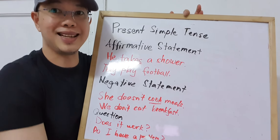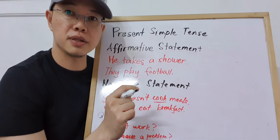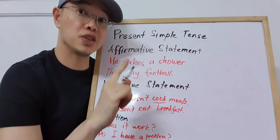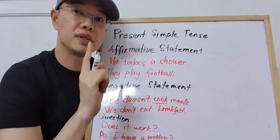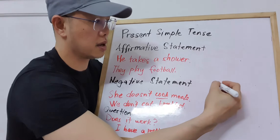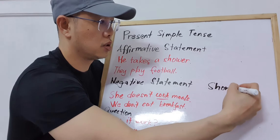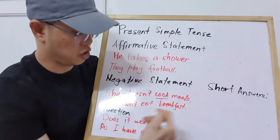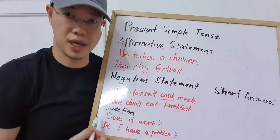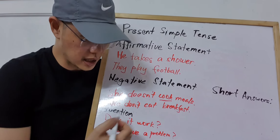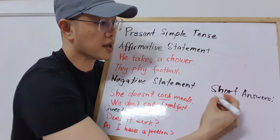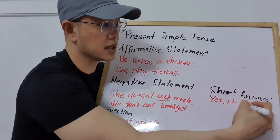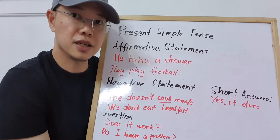Now, how do you make short answers? I also have a separate lesson for the rules on making short answers properly. Let's do short answers with the questions we made. For 'Does it work?' your answer can be: 'Yes, it does.'